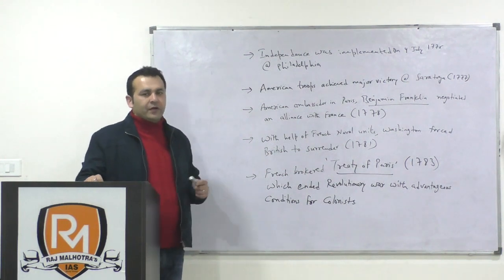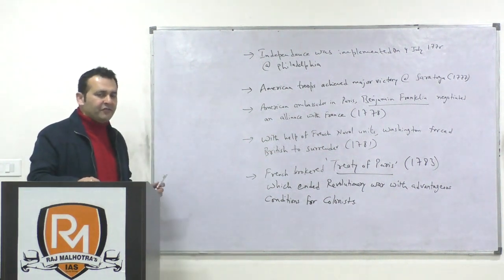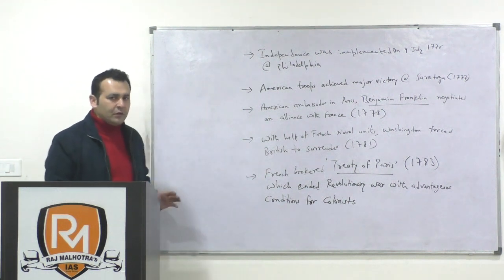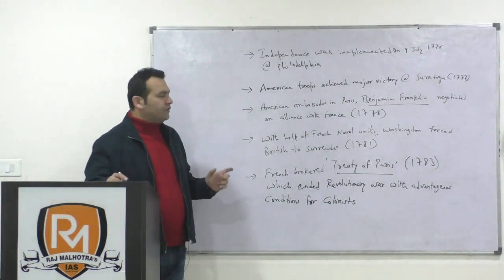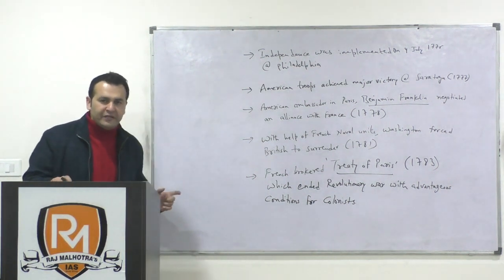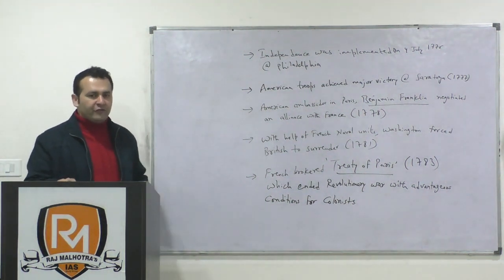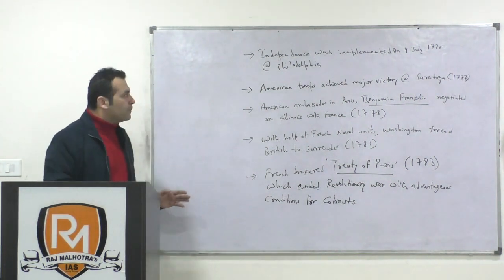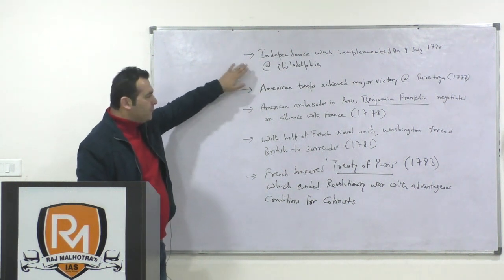If there is a question in the exam on causes, events, and consequences, then you will be comfortably placed. So, the causes: 13 colonies met in 1776 in Philadelphia at the Continental Congress, where George Washington was its leader, and America declared its own independence with the slogan 'No taxation without representation' in 1775. Independence was politically implemented on the 4th of July 1776 at Philadelphia.